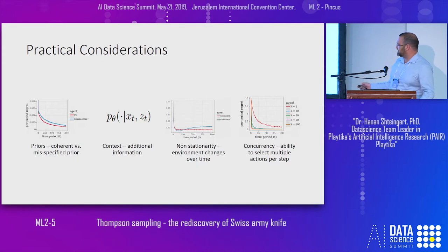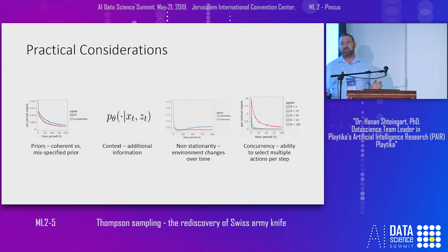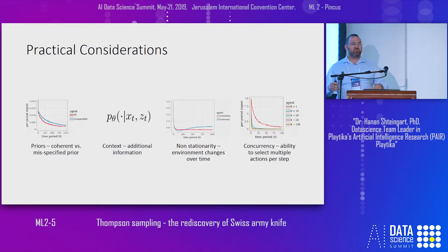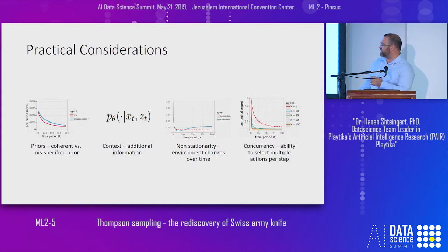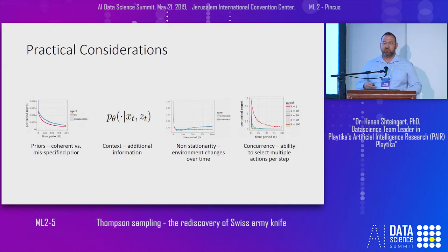Last but not least: concurrency. Until now I described a situation where at every time step you can select only one action — show ad A, B, or C. But usually in real life you don't make one action but a batch of actions. In a website you might update your policy every 15 minutes, seeing many users at once. This is concurrency — the ability to select multiple actions per step, running many experiments in parallel on your environment, which actually makes learning faster.